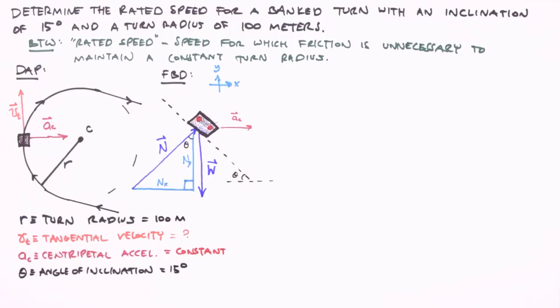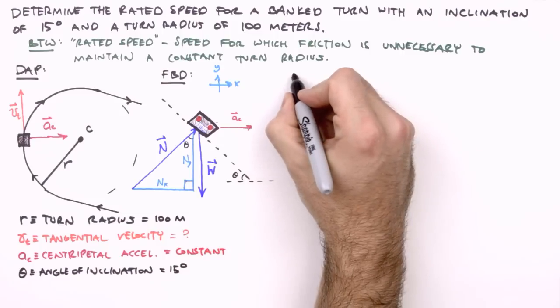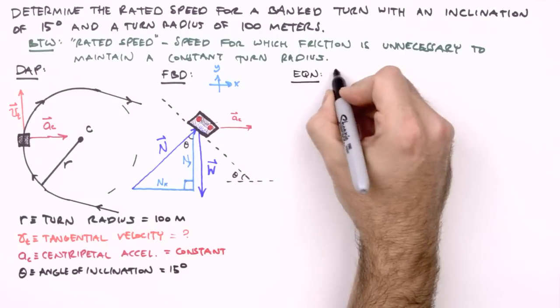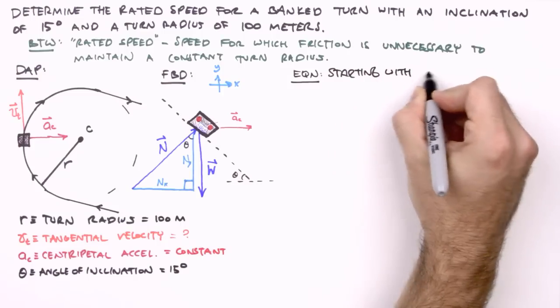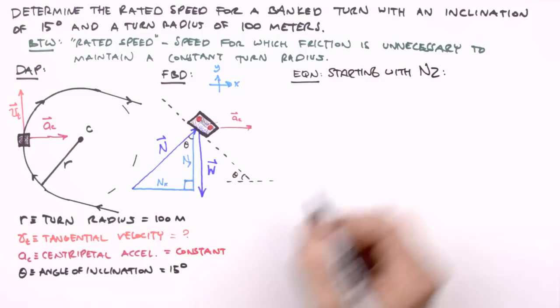And that does it for our knowns and unknowns. As mentioned previously, and forecasted by our use of a free body diagram, we will be analyzing the vehicle's motion using Newton's second law. Given the multidimensional aspect of its motion, we'll analyze each component of its motion and its causes separately.